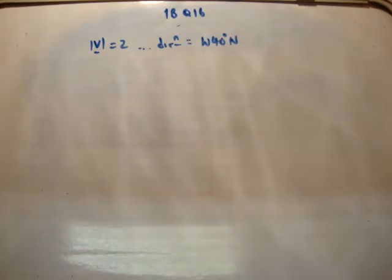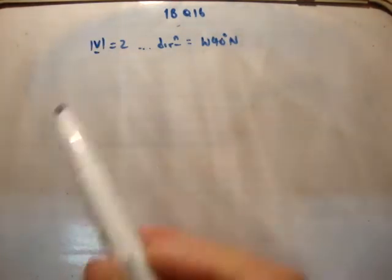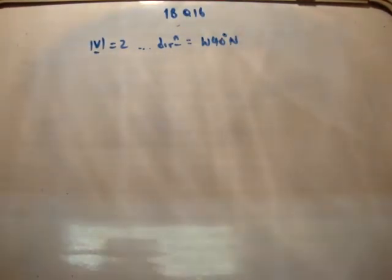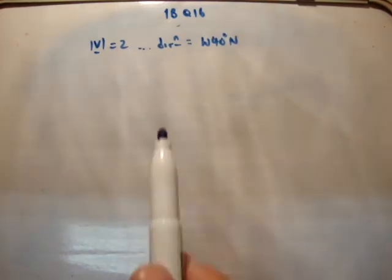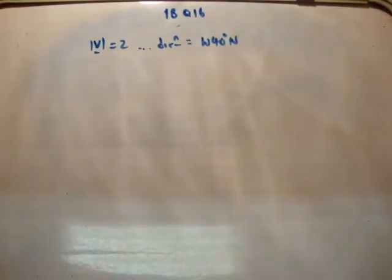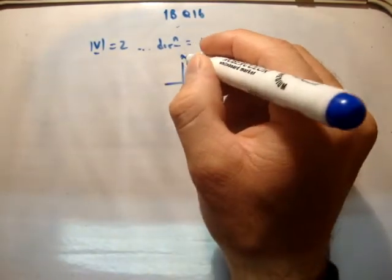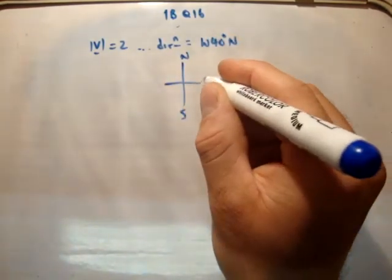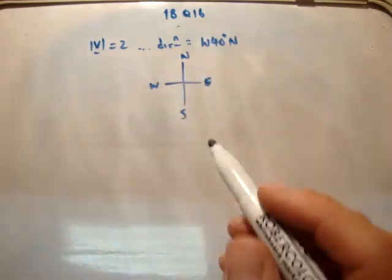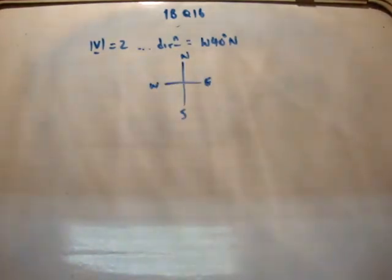In this question you're given that a vector v has a magnitude of 2. Remember the straight angle brackets mean a magnitude, and it's given a direction of west 40 degrees north. So first of all, just a quick recap on your compass: north, south, east, west. So west is, as you look there, to the left.